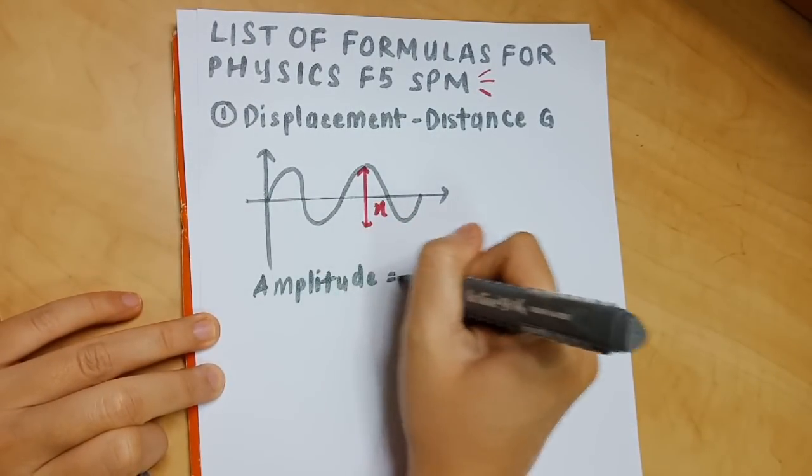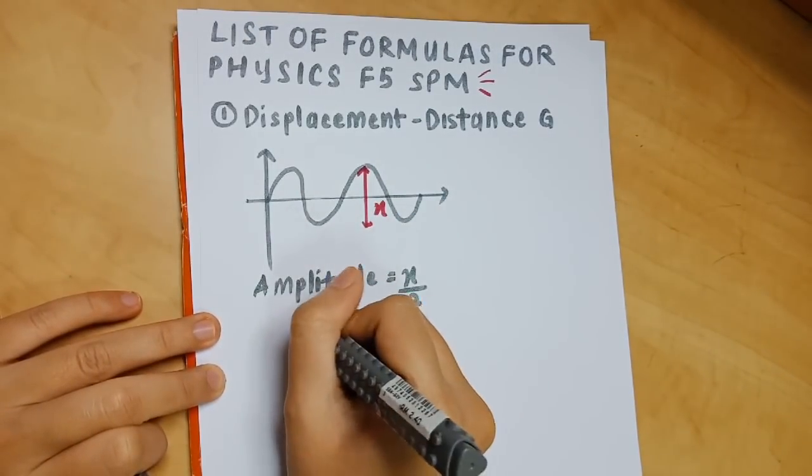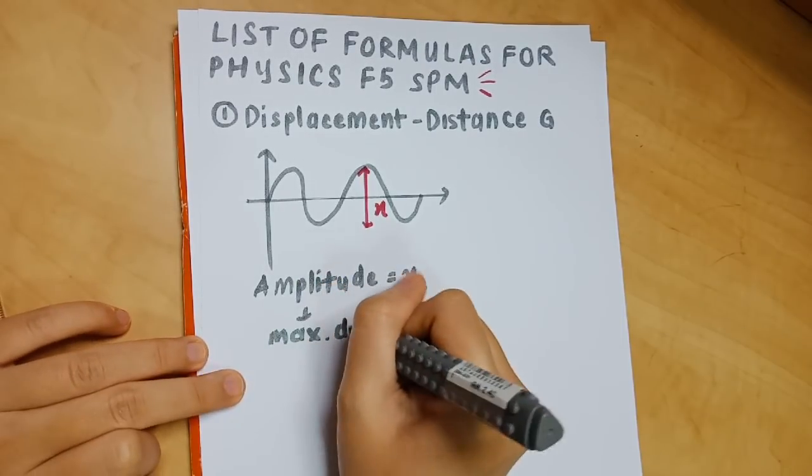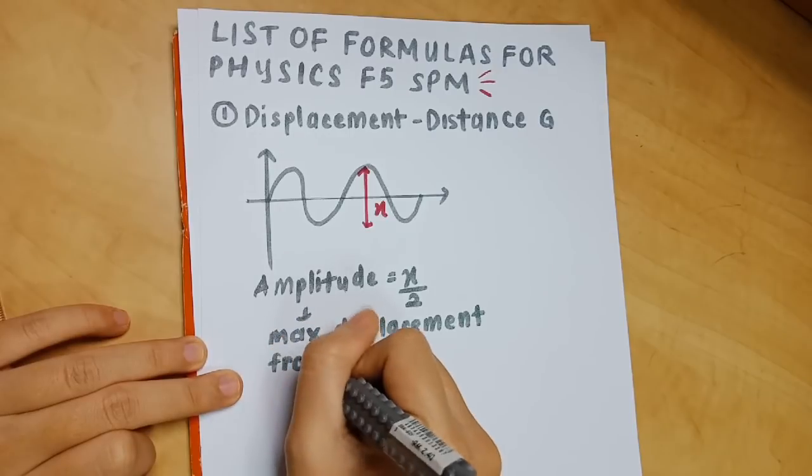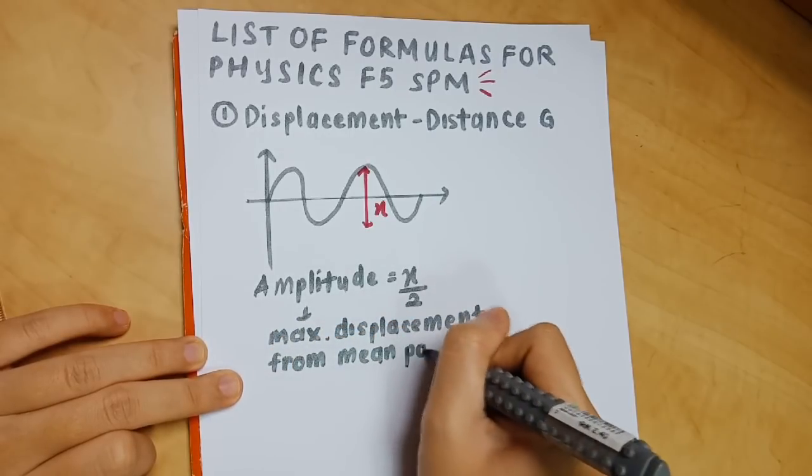Amplitude means the maximum displacement from mean position, so from the center. That is why you need to take x and divide it by 2.